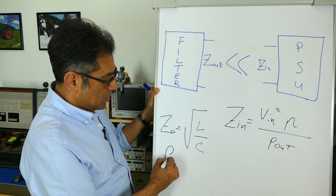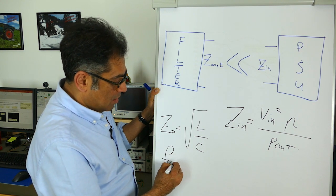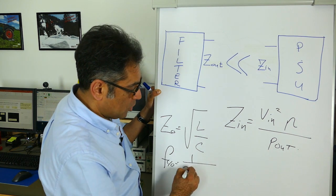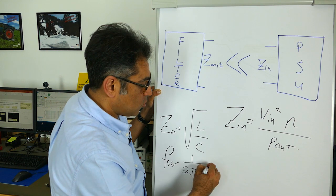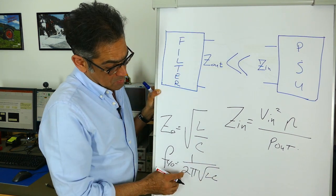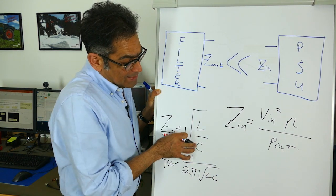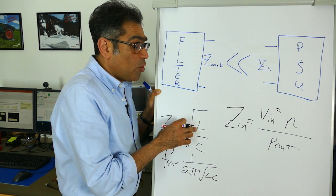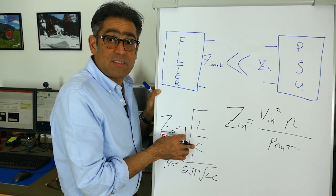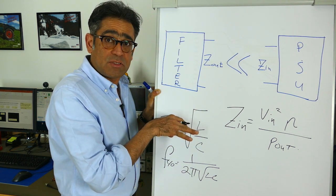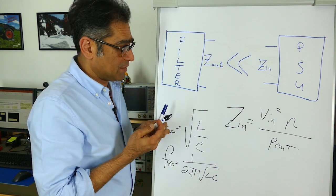Now given that the cutoff frequency of the filter is 1 over 2π times the square root of LC, by selecting the appropriate value of C, i.e. a smaller value of L and a larger value of C, you could actually reduce Z_out and we will discuss all of these later when we design a filter.